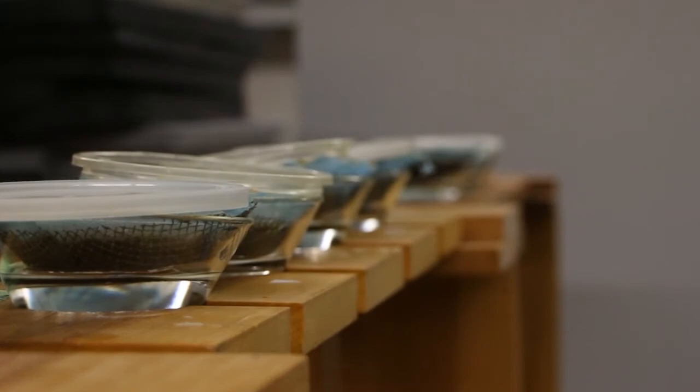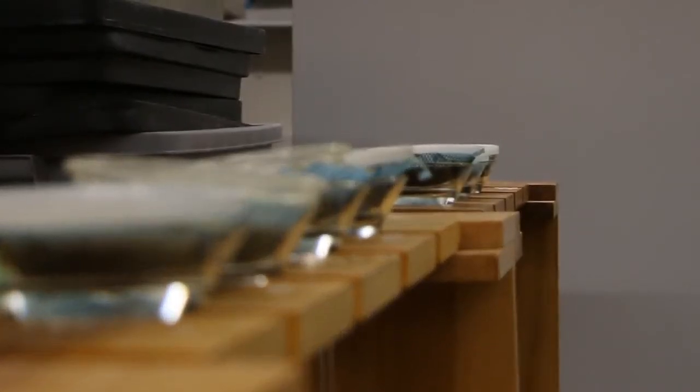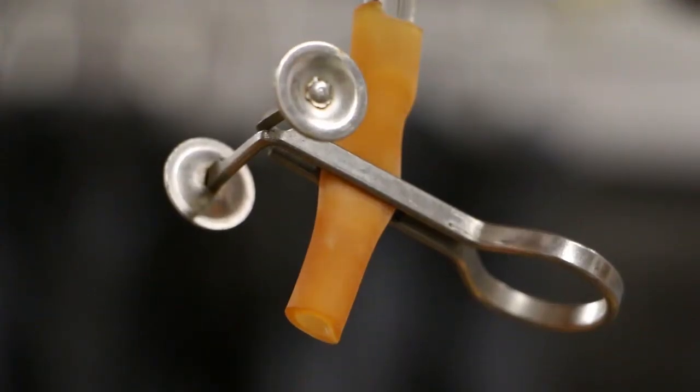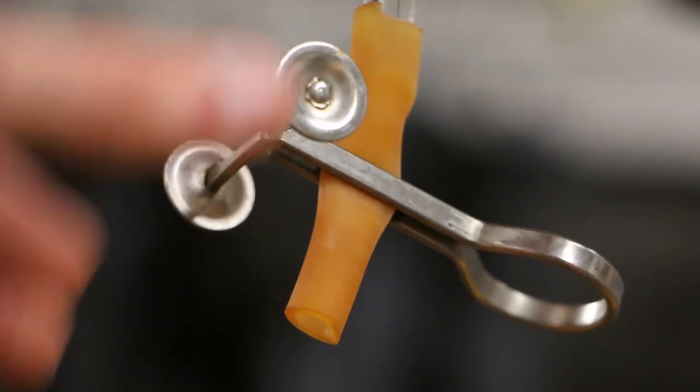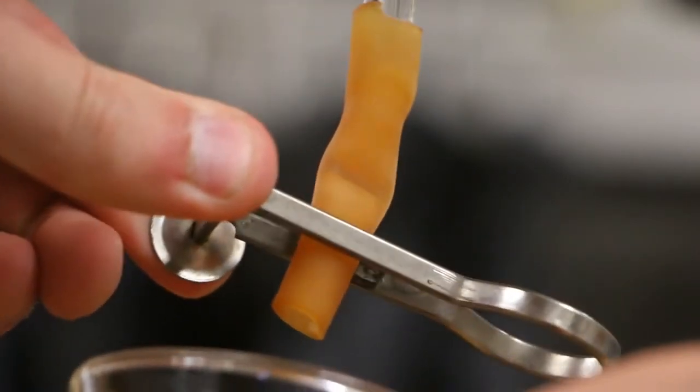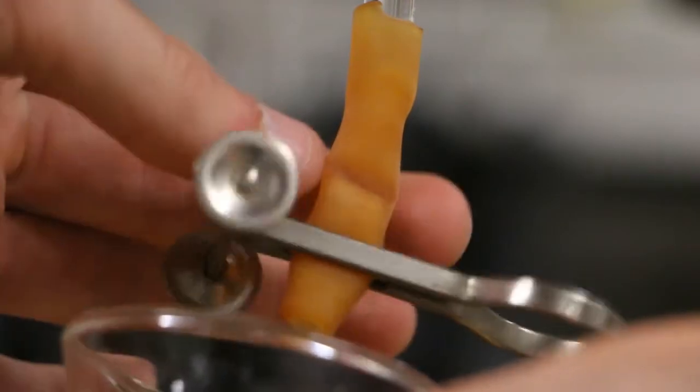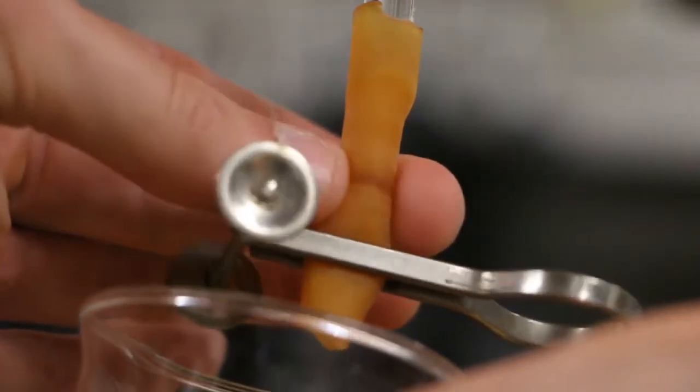Once the funnels have sat overnight, they're ready to be tapped. Undo the clamp and let about 20 milliliters of water through. If the tube gets pinched, use your fingers to gently prod it open. But remember, there are nematodes there, and you don't want to squish anybody.